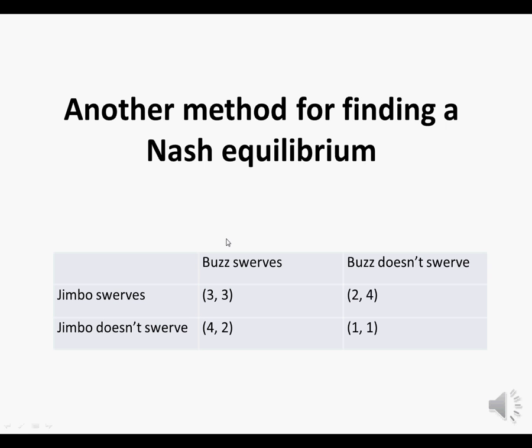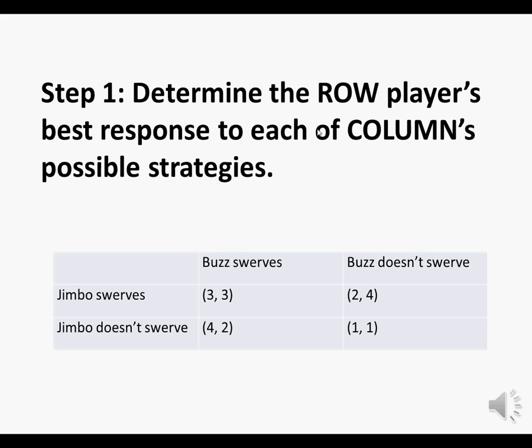Now, let's show you how to find the Nash equilibrium of the game Chicken using the alternative method we learned last lesson in the Prisoner's Dilemma lesson. The first step is to determine the Row player's best response to each of Column's possible strategies. Column has two strategies: Buzz can either swerve or not swerve.